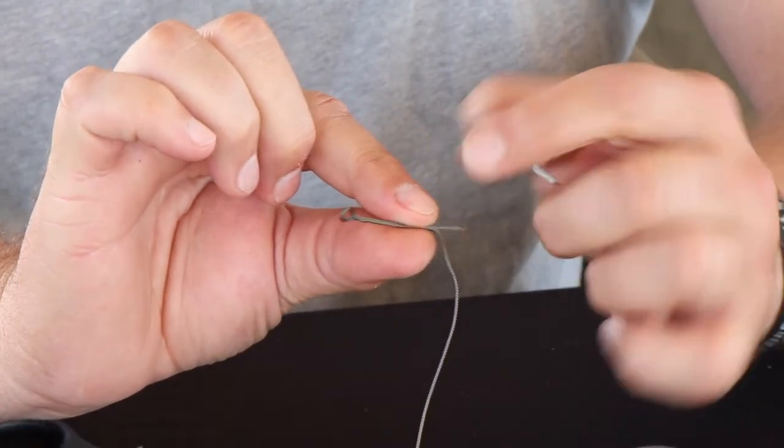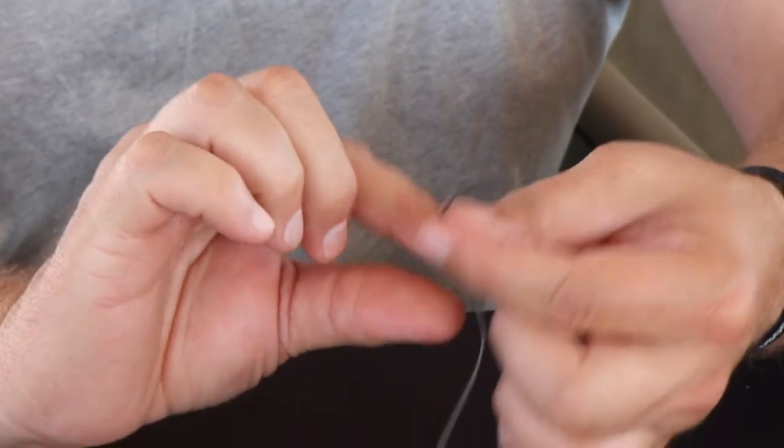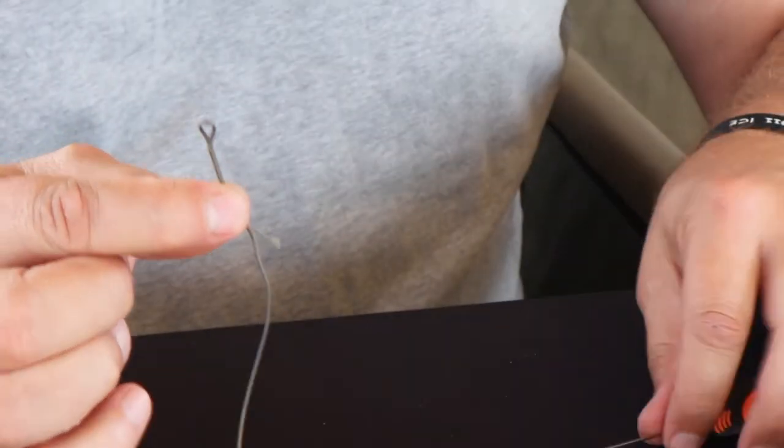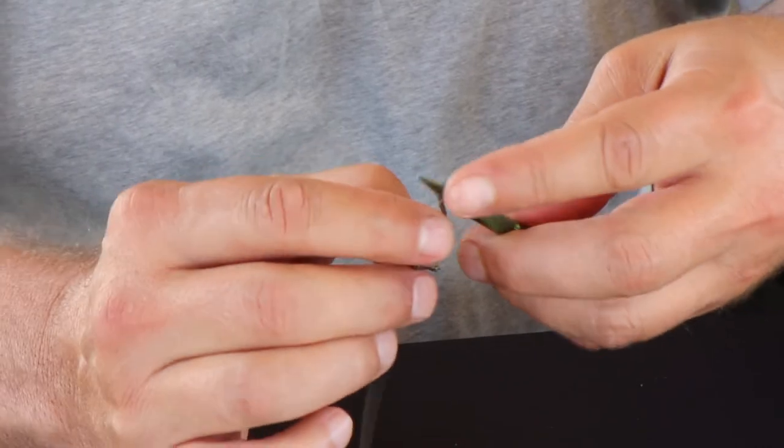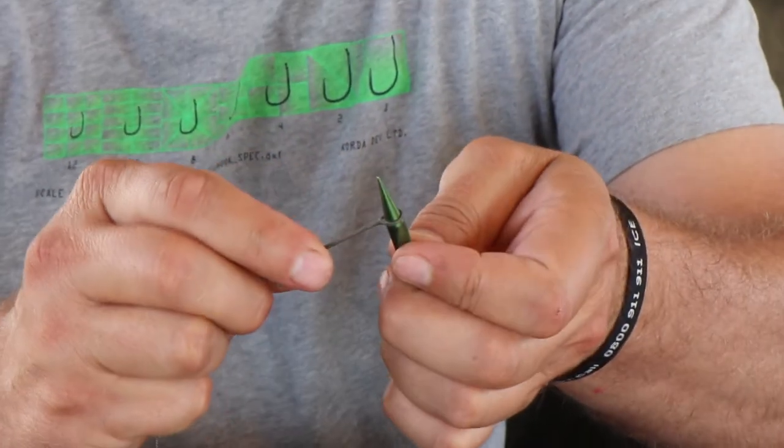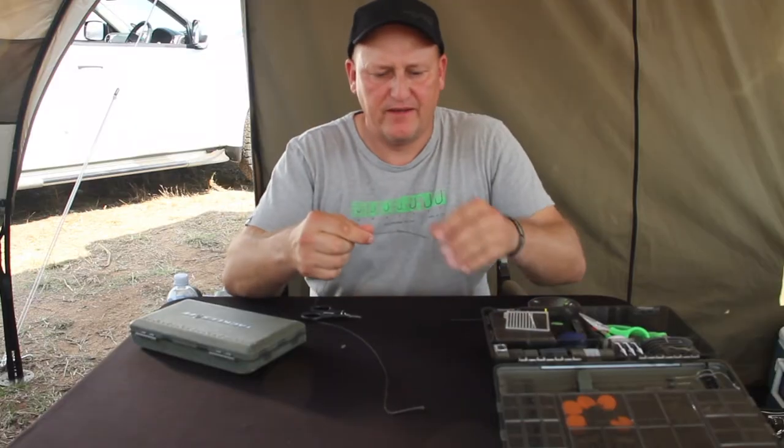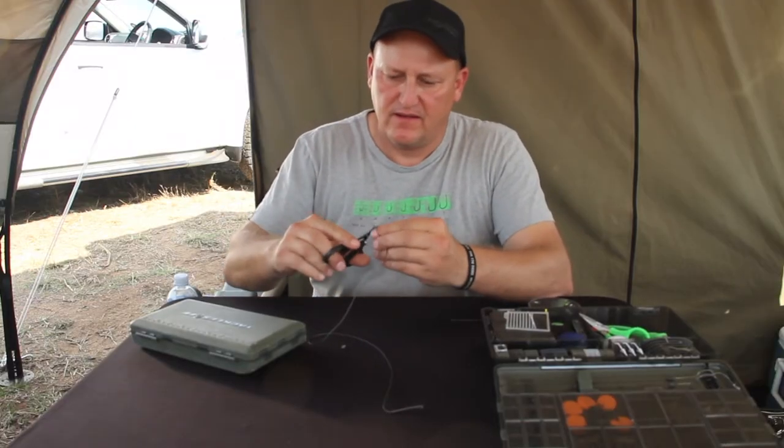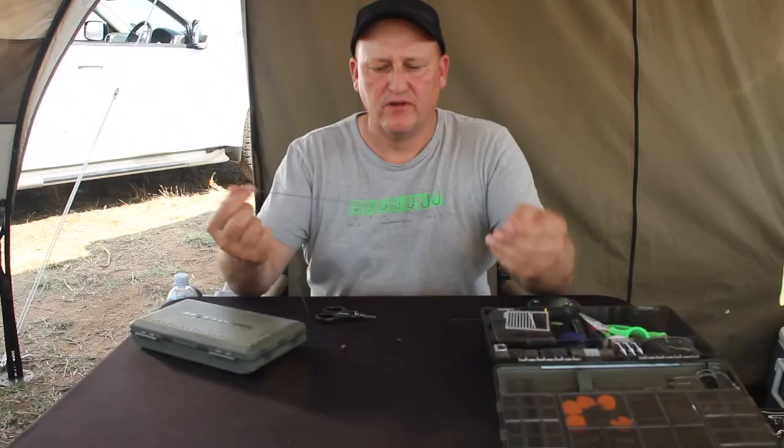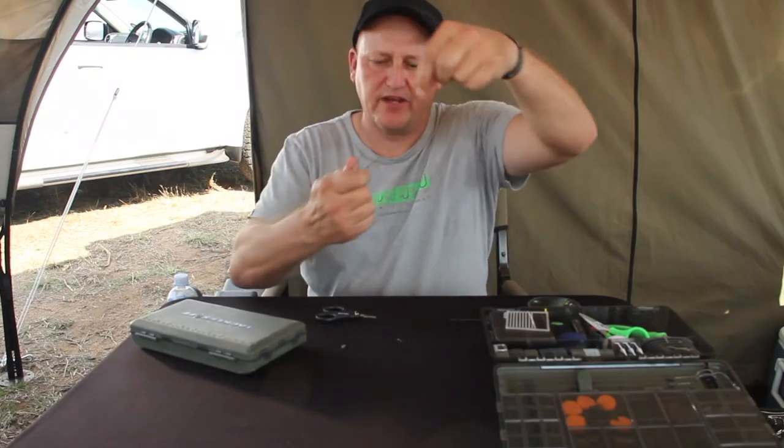I can literally create that loop as big as I want, but I don't really want it bigger than just sitting on the edge of my chod tool. I pull it, cut it off, and there I've got a perfectly created splice.